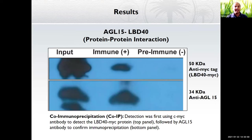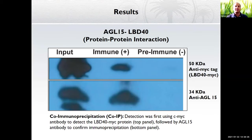The first result: there is indeed a protein-protein interaction between AGL15 and LBD40. We demonstrated this using co-immunoprecipitation. LBD40 has a MYC tag and AGL15 has an anti-AGL tag. We ground the embryo culture tissue, co-immunoprecipitated using AGL15, ran the gel, and performed Western blot — first detecting LBD40 with MYC antibody, then AGL15. When there is AGL15, there is LBD40; when there is no AGL15, there is no LBD40, confirming protein-protein interaction.